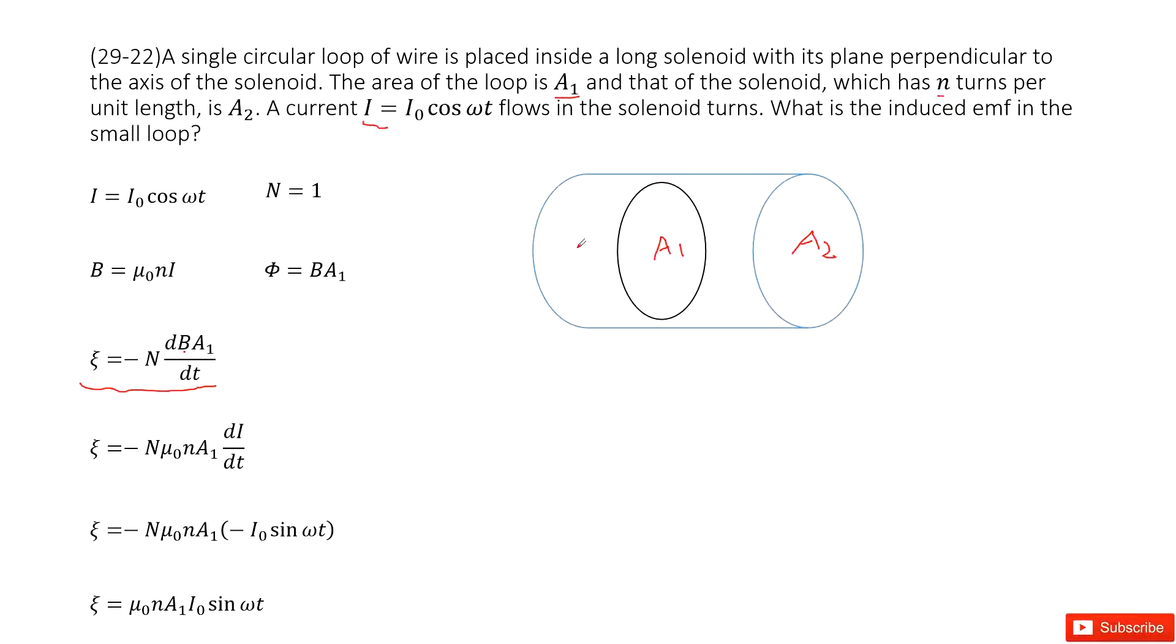So it looks like we need to find the B, how the magnetic field changes with time. And then where does this magnetic field change? Just goes through the small loop. So we need to find the magnetic field from this solenoid as μ₀nI.